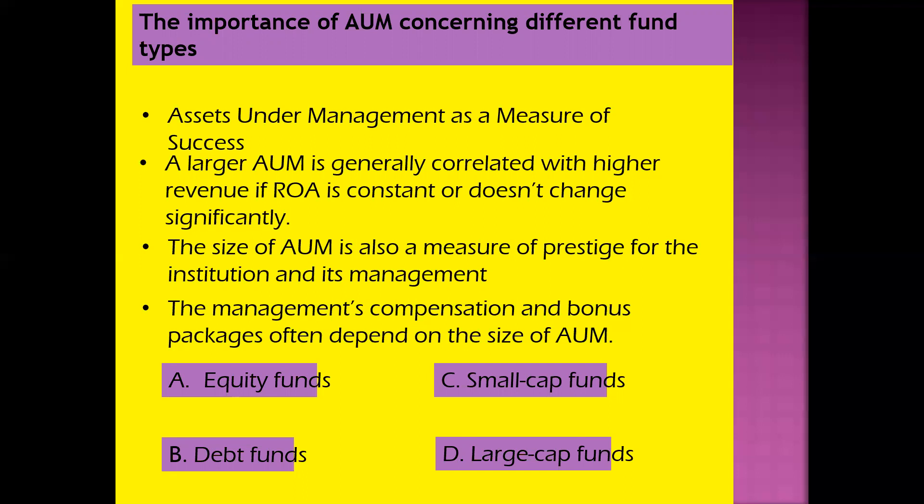AUM is the measure of success for a company or institution. If AUM is larger, it is highly correlated with higher revenue when ROA doesn't change significantly. The size of AUM is also a measure of prestige — companies and institutions are generally ranked based on this metric. Even asset managers and banks are ranked based on AUM. Moreover, bonus packages and management compensation also depend on the size of AUM. That's why it is very important to keep AUM high, as it measures your success, the company's reliability, and determines how managers and institutions are ranked.